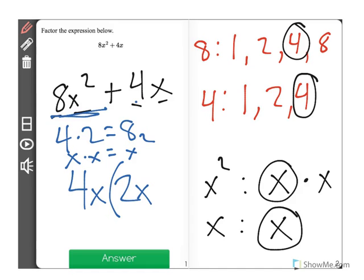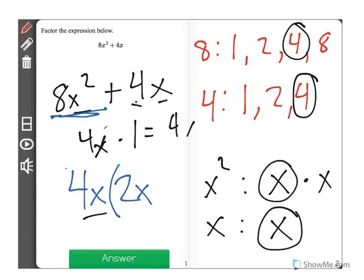Now let's look at 4x and ask ourselves how do we go from 4x right here to 4x. Well 4x times 1 is 4x. So this is going to be plus, remember we keep this sign, plus 1.